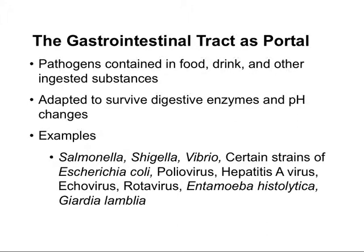The gastrointestinal tract is another big portal. Pathogens contained in food, drink, and other ingested substances enter through the GI tract. These pathogens are highly adapted to survive digestive enzymes as well as the great pH changes seen going through the digestive tract. Examples include Salmonella, Shigella, Vibrio, certain pathogenic strains of E. coli, the poliovirus, Hepatitis A virus, Echovirus, Rotavirus, Entamoeba histolytica, and Giardia lamblia — one very familiar to those living in a mountain environment and hiking around.